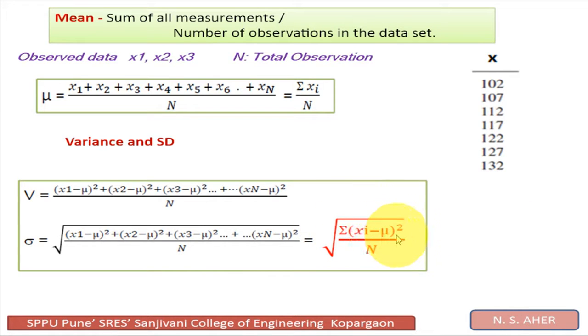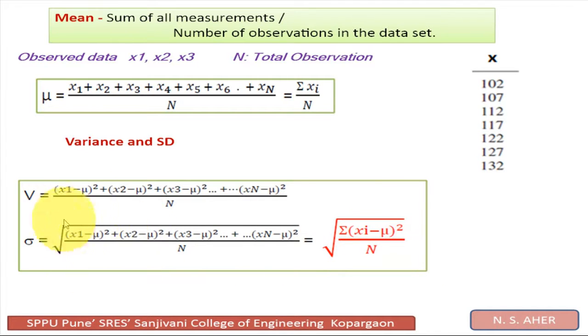That is equal to the square root of summation of (xi − μ)² upon capital N. So in this way we calculate standard deviation. Standard deviation is the square root of variance.